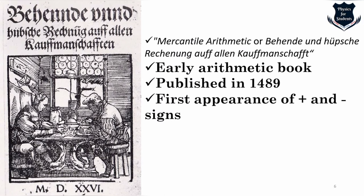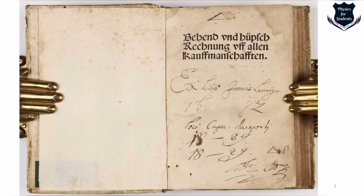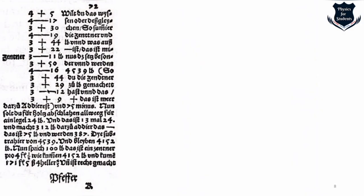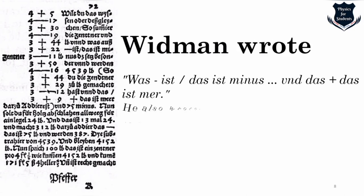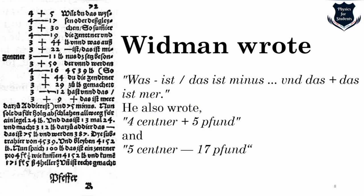This book became famous since it contained the first appearance of the plus and minus signs for addition and subtraction. An excerpt from the book shows Widman wrote in German, using plus to indicate the excess or deficiency in the weight of boxes or bales. Since it was a merchant-related book, it signified excess or deficiency in the weight of boxes.